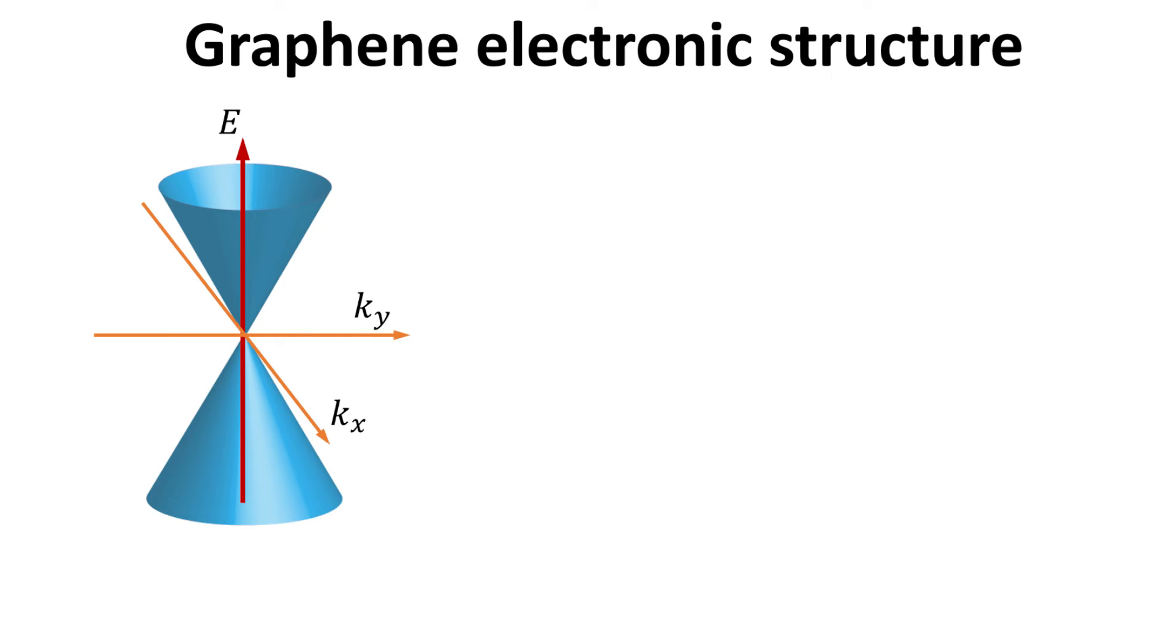Recall the electronic structure of graphene at the two inequivalent kappa and kappa prime valleys can be described by Dirac cones as shown. We refer you to our previous videos on the calculation of the electronic structure of graphene in this series.